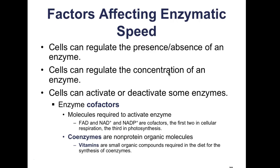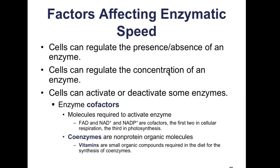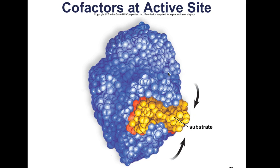Vitamins are part of a coenzyme's molecular structure. If a vitamin is not available for making coenzymes, enzymatic activity can decrease and result in a vitamin deficiency disorder. For example, a niacin deficiency results in a skin disease called pellagra, and a riboflavin deficiency results in cracks at the corners of the mouth. Cofactors sit at the active site of the enzyme; when the substrate binds, the product is eventually released.